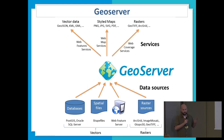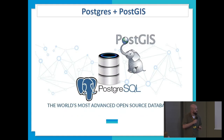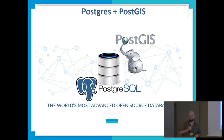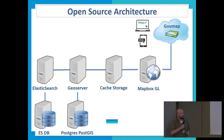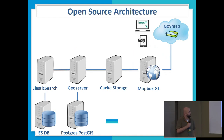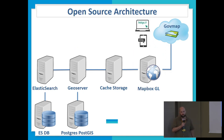GeoServer will allow us to expose WMS and WFS services, and of course Postgres and PostGIS, which are very powerful databases. In a few slides I have an example of one model where we already used PostGIS because we couldn't use Oracle there. So the target architecture is GeoServer, cache storage with MVT tiles, and Mapbox GL on the front end. We're also working on Elasticsearch, which will replace our proprietary natural language search engine. Elasticsearch is in beta right now and we hope it will be live quite soon.